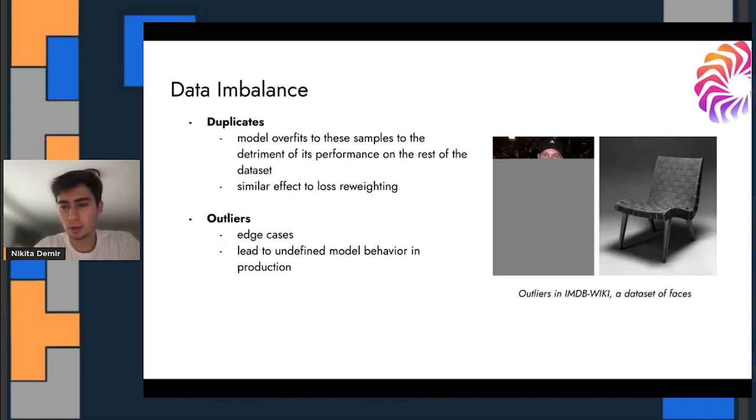Outliers, for example, are also kind of the opposite of duplicates. These are typically edge cases, things that are indicative of the model's behavior and production on kind of defined regions. For example, these are outliers in IMDB wiki, which is a data set of faces. The chair has really nothing to do with the data set. And while the image on the left is maybe similar, it's mostly grayed out. There's basically some choice you have to make and really pay attention to here because this could be either an example of where the model would fail in production or something that is throwing off its training because it has nothing to do with the rest of the data.